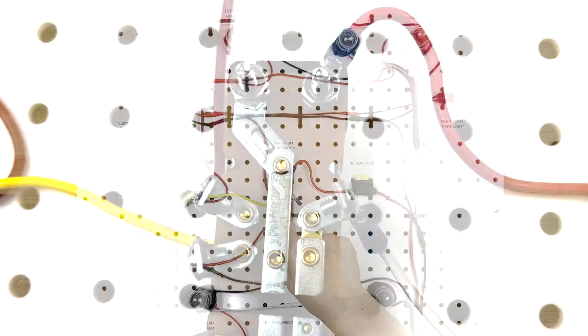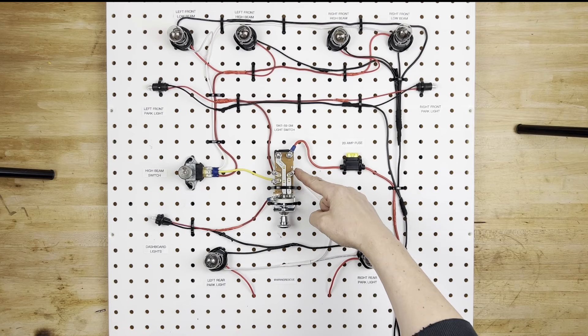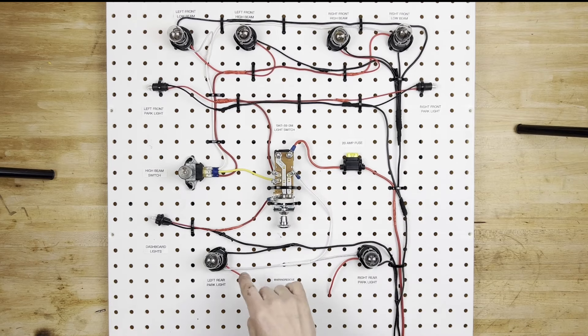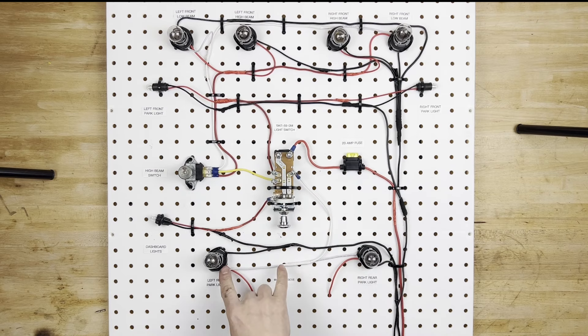Next on the list is tail. It's labeled right here, and you can see it's this white wire that comes down here, and it splits off to both of these rear lights.